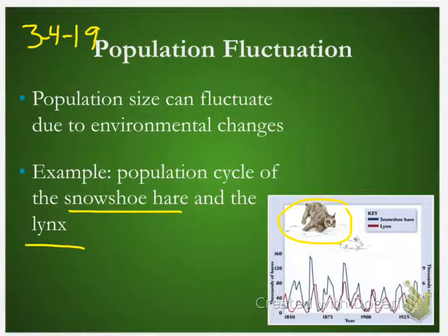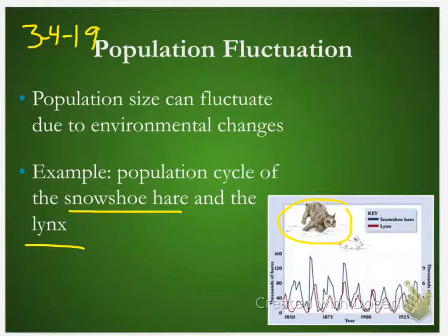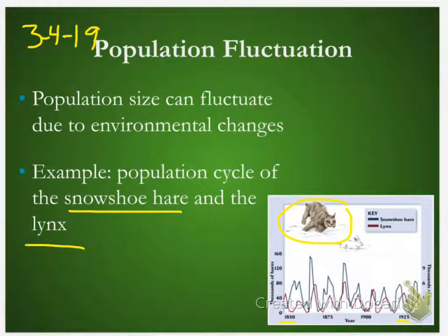This was a very classic study that was done, taking data and putting together population size data on two different species that are connected. Look closely at the years on that — 1850 to 1925. And I want to say that this was put together in the 40s or 50s. How do you get population data that's 100 years old?